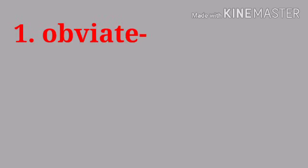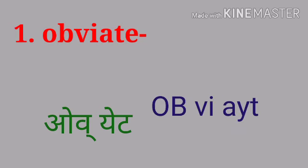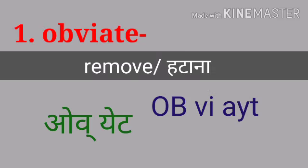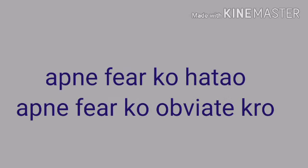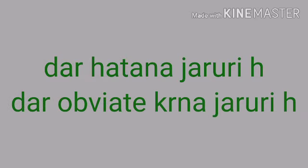The first word is 'Obviate.' Obviate means 'remove' — यानि हटाना. For example: अपने फियर को Obviate करो (remove your fear). डर Obviate करना जरूरी है (it is necessary to obviate fear).